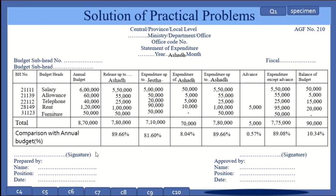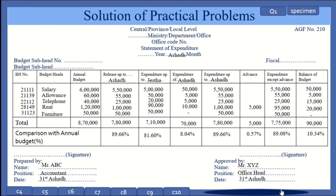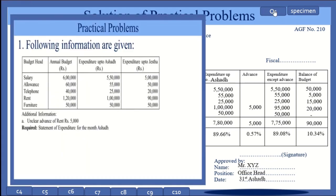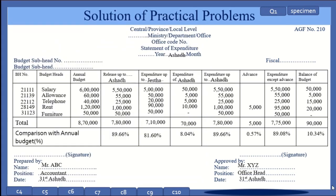We also need to complete the prepared and approved section. The name of the person who prepared the statement — Mr. ABC, position: accountant — should be written here, along with the date of preparation, which is the 31st of Ashar, and the accountant's signature. In the approved section, the name of the office head — Mr. XYZ — along with his position, the date 31st Ashar, and his signature should be recorded. This completes the solution. Thank you very much for watching.